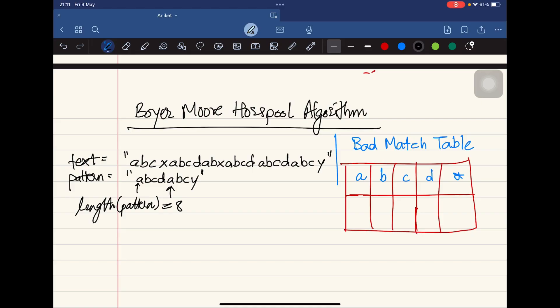In this video we are going to look at the Boyer-Moore-Horspool algorithm, which is a string matching algorithm. Given a text, we need to find whether a pattern exists in that text or not.